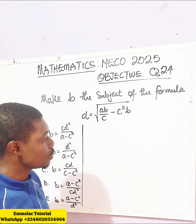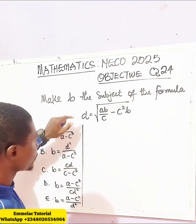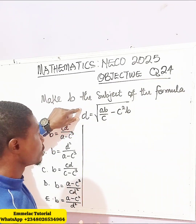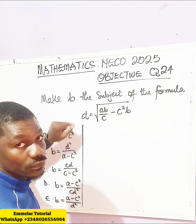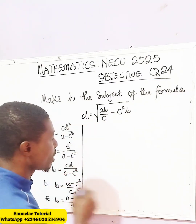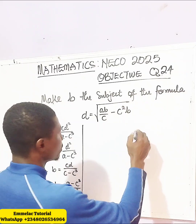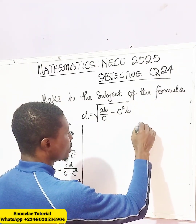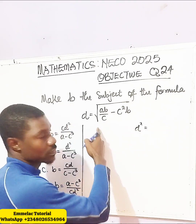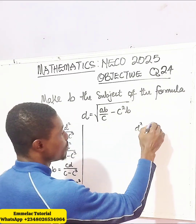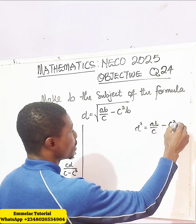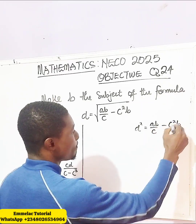First of all, what we need to do here is square both sides — raise both sides to the power of 2 — so that we can undo the square root. By doing that, we have D squared equals AB all over C minus C squared B.